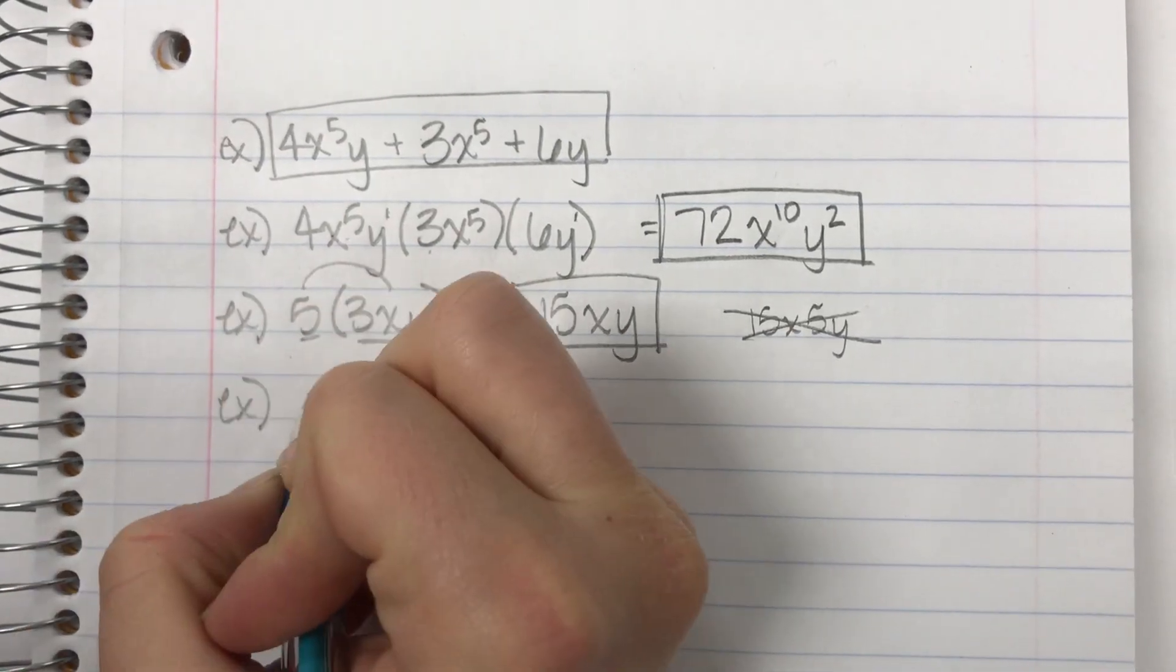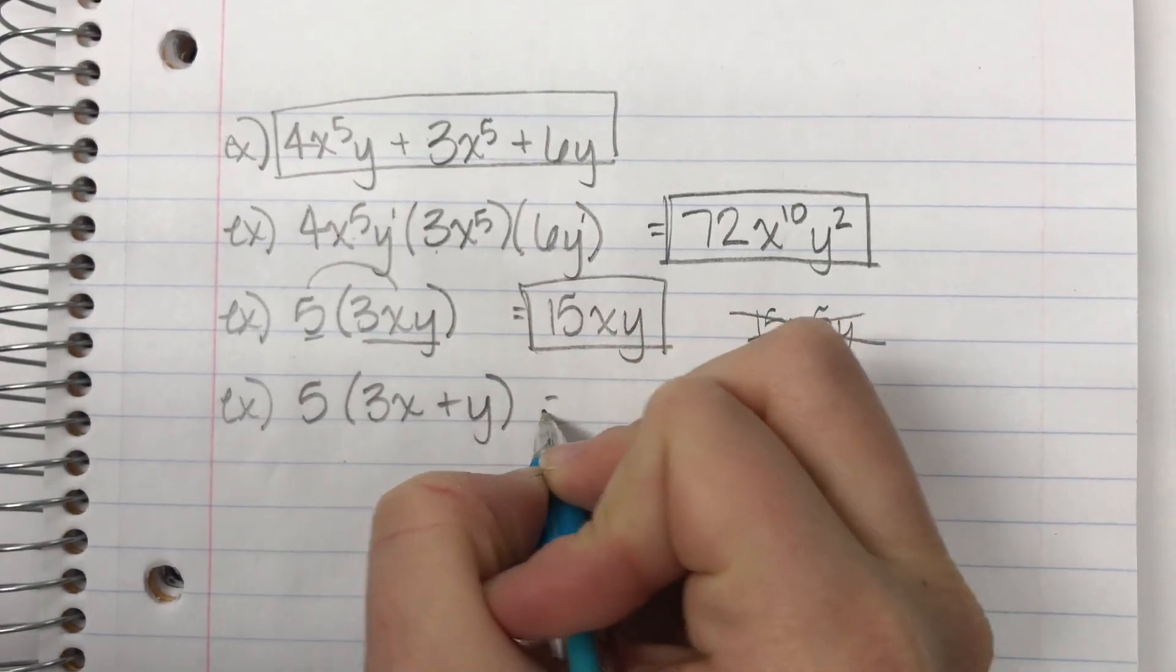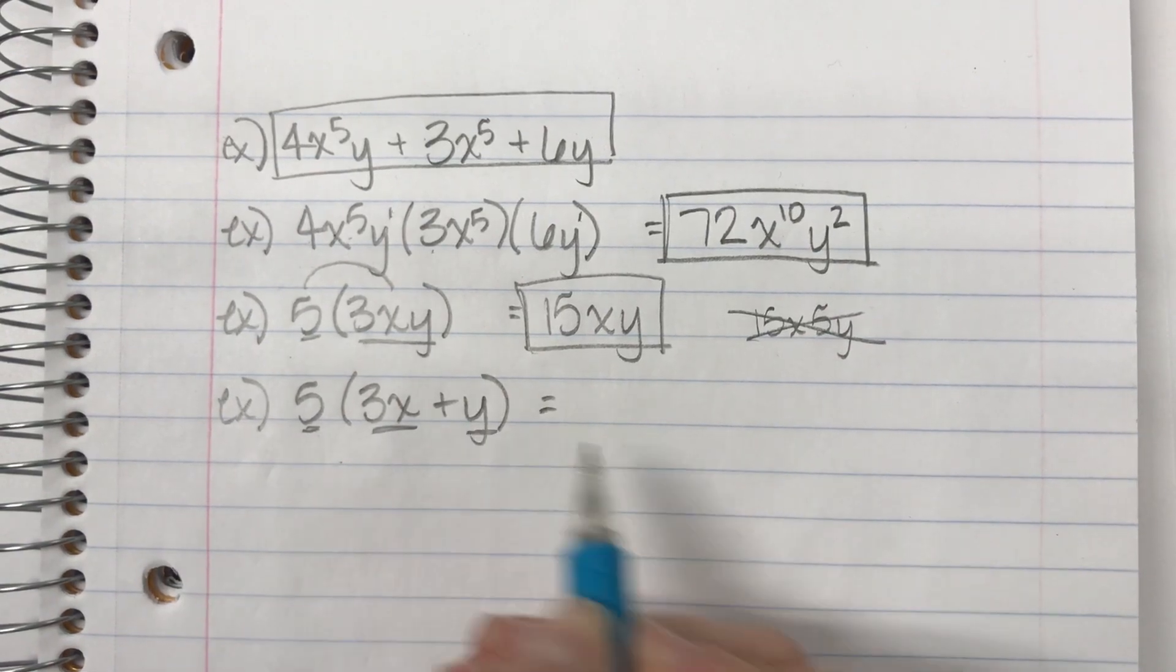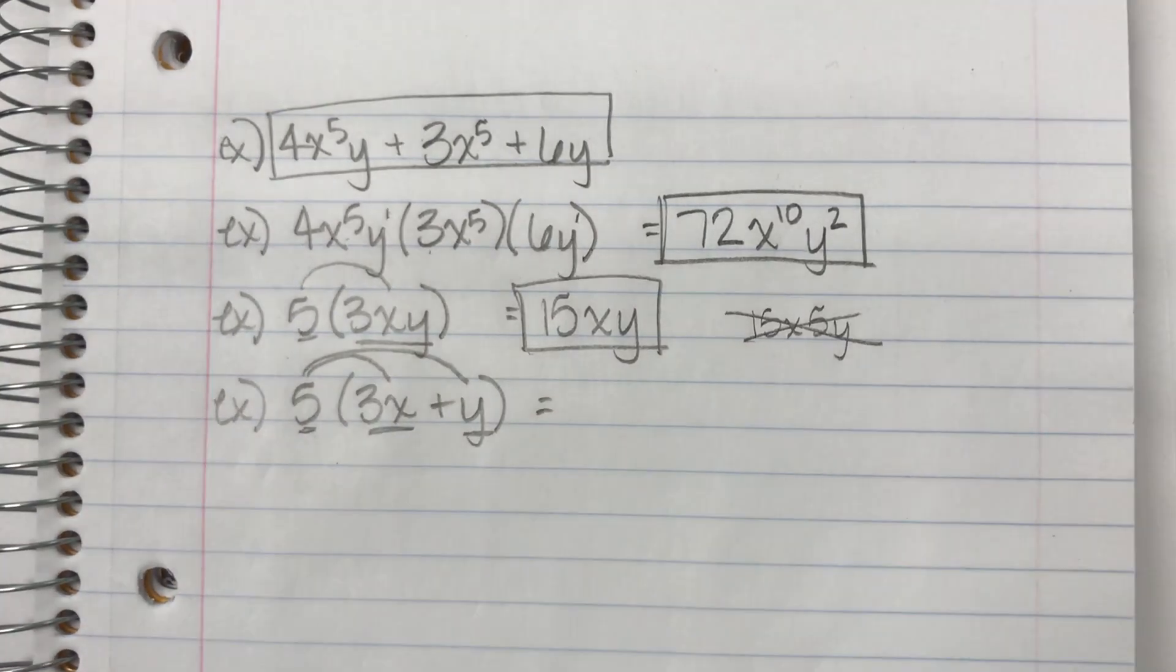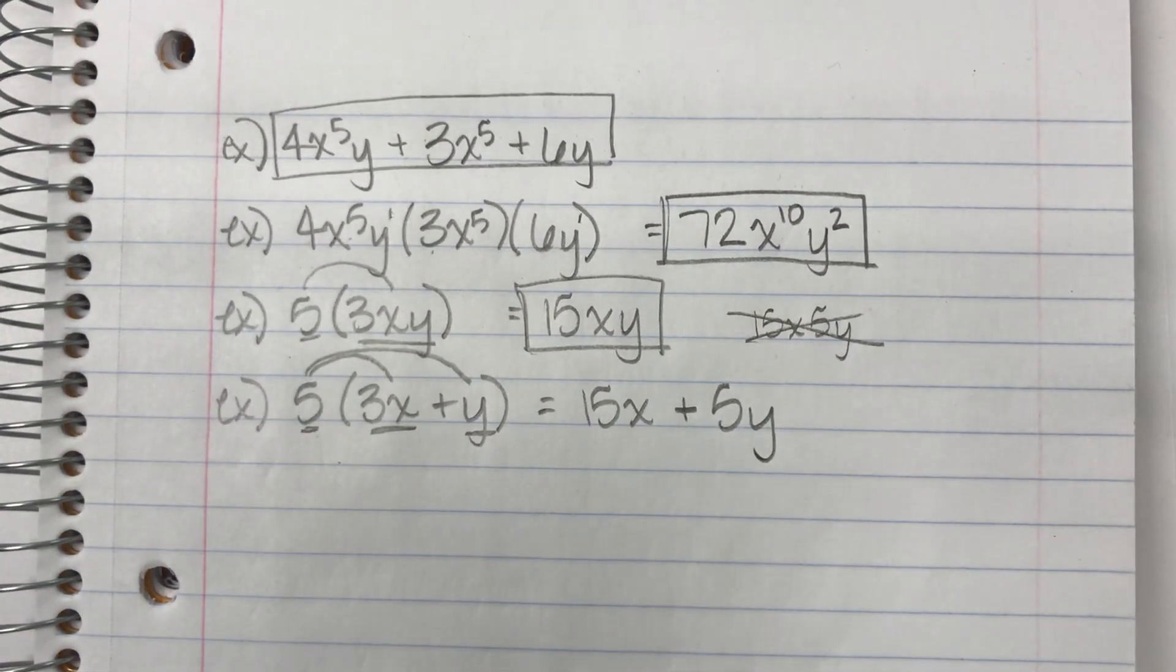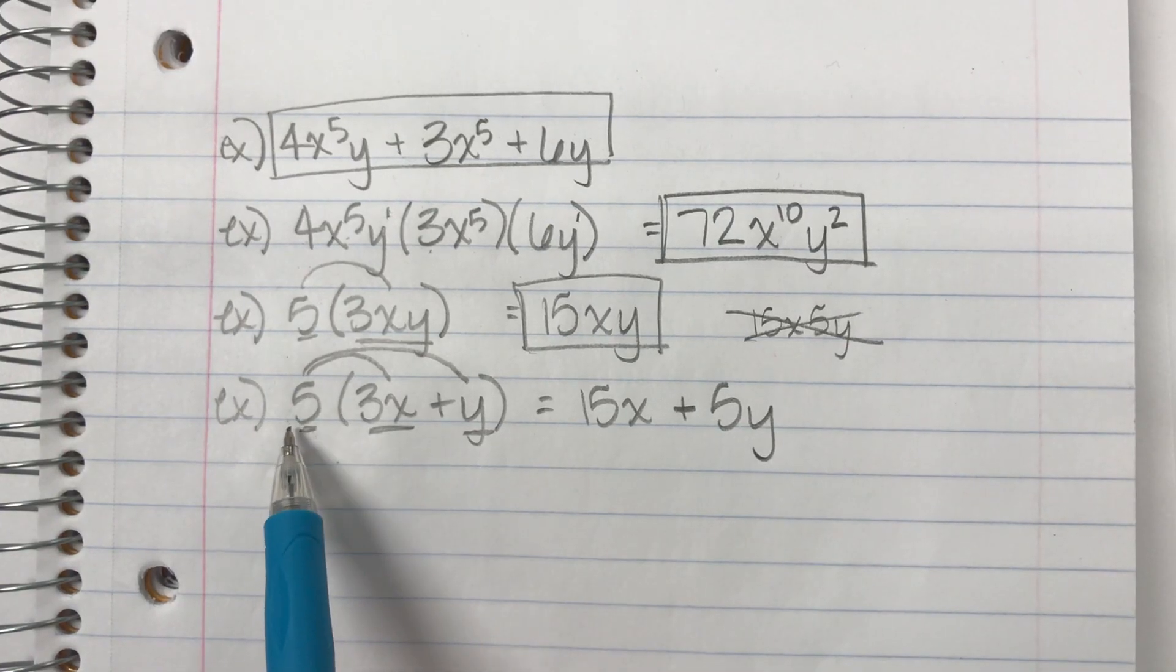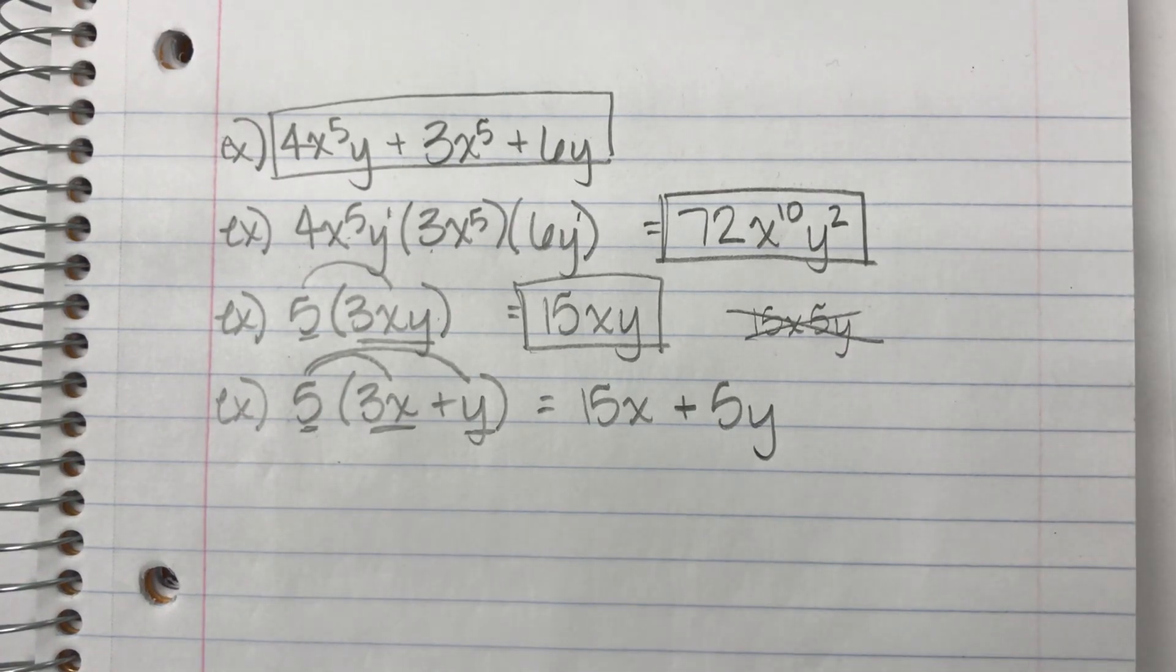The reason I want to bring that up is because the situation does change if it's 3x plus y. Now I have one term times two terms. So here I'm going to multiply by the first term, then multiply by the second term. So I get 15x plus 5y. So look at those, kind of compare and contrast the situations. I need you to know when do you distribute that coefficient out front versus when do you just leave it as it is and just multiply the coefficients only.